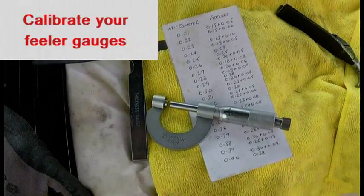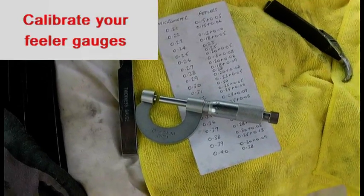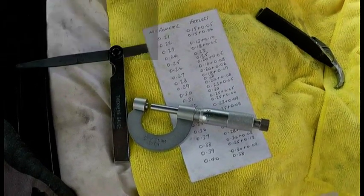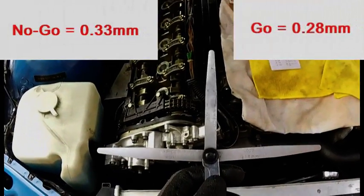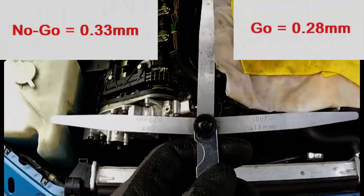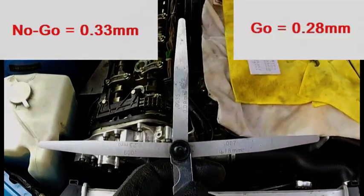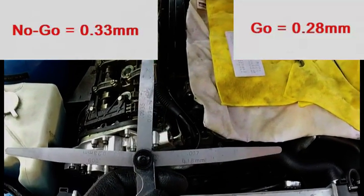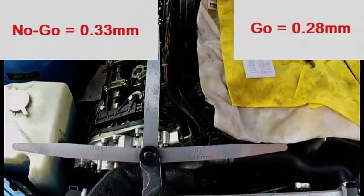Before doing any measurements you should calibrate your feeler gauges against a micrometer. We are going to use go no go gauges. I have got a 0.23 and 0.09 which on the micrometer is 0.33 and a 0.18 and a 0.09 which on the micrometer is 0.28.